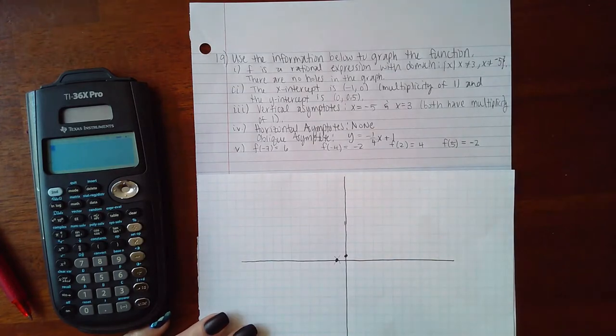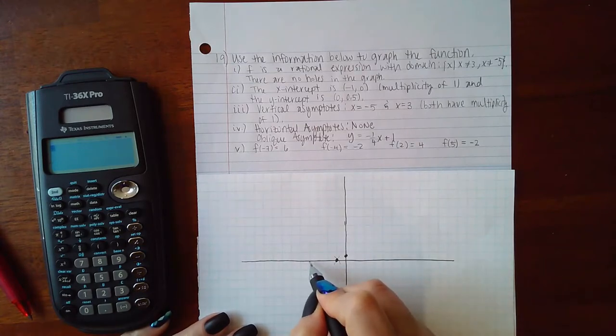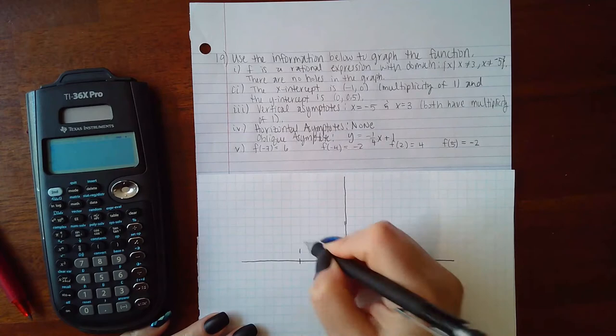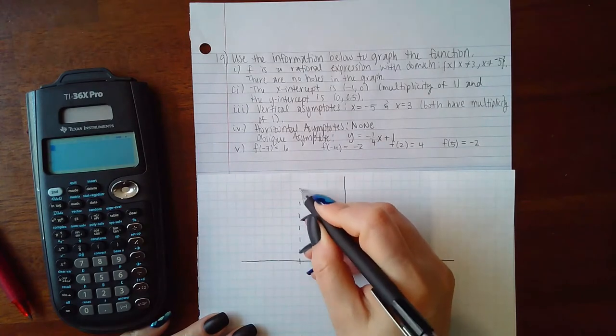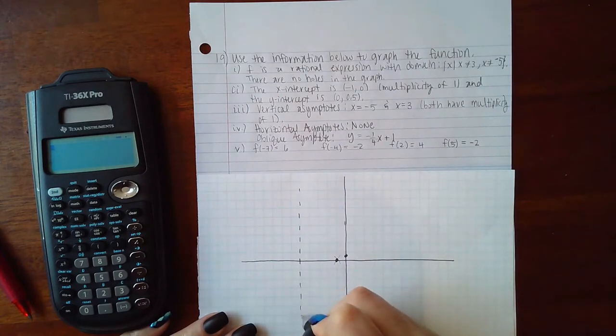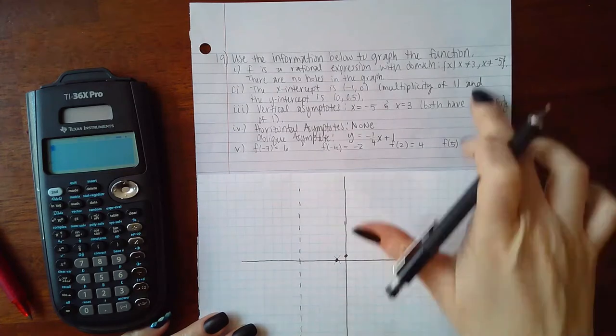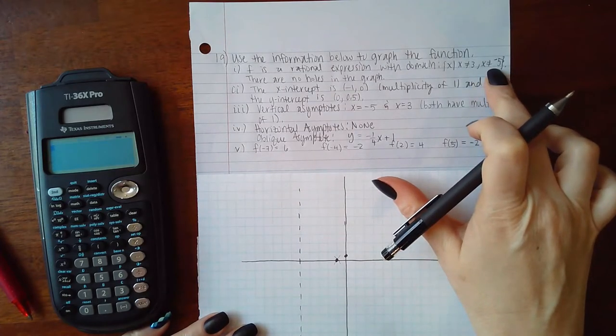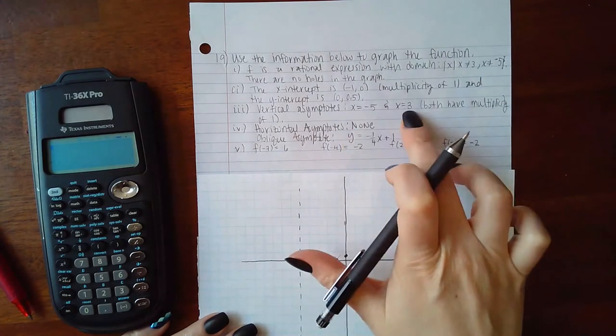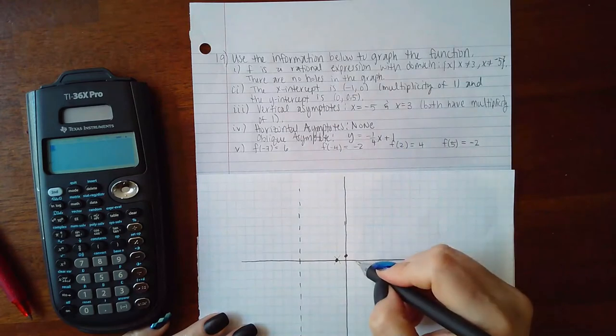The next thing I know is that the vertical asymptotes are at negative 5, 1, 2, 3, 4, 5. So I have a vertical asymptote here, which explains the domain, why x is not equal to negative 5. And I have another vertical asymptote at 3, 1, 2, 3.